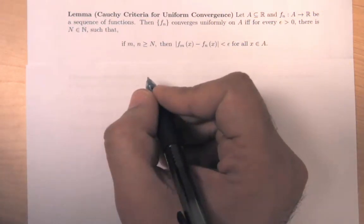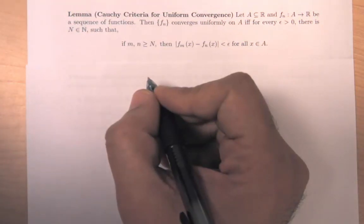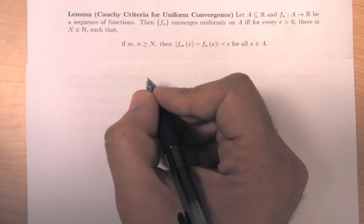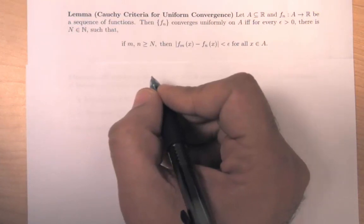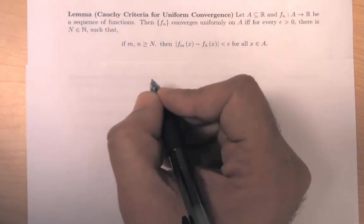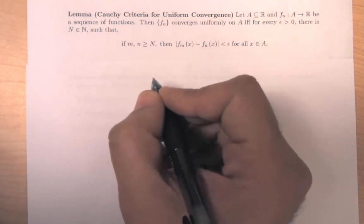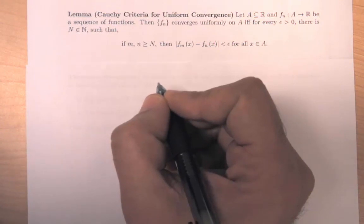One of the main results of real analysis one is that if a sequence of numbers converges then it is Cauchy, and if a sequence of numbers is Cauchy then it is also convergent. Similarly we can say the same thing about uniformly convergent functions: if a sequence of functions converges uniformly then we can actually describe that convergence using the Cauchy criteria.